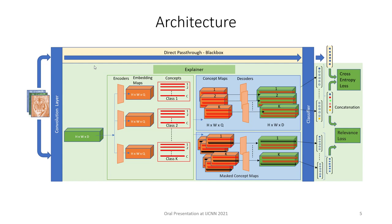This is the architecture diagram of our framework. We can insert the framework at any convolutional layer of interest. We extract the feature maps from the convolutional layer and process them through the encoder-decoder as well as the concept vectors, which are integral parts of our framework, and extract the concepts that are integral towards the prediction of a class. We will go through each component of our architecture in detail in the upcoming slides.